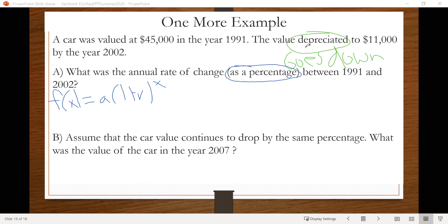And since we're looking for the annual rate of change, that tells us we want the value for R here, which means we should have all the other information. So let's go through what we have.